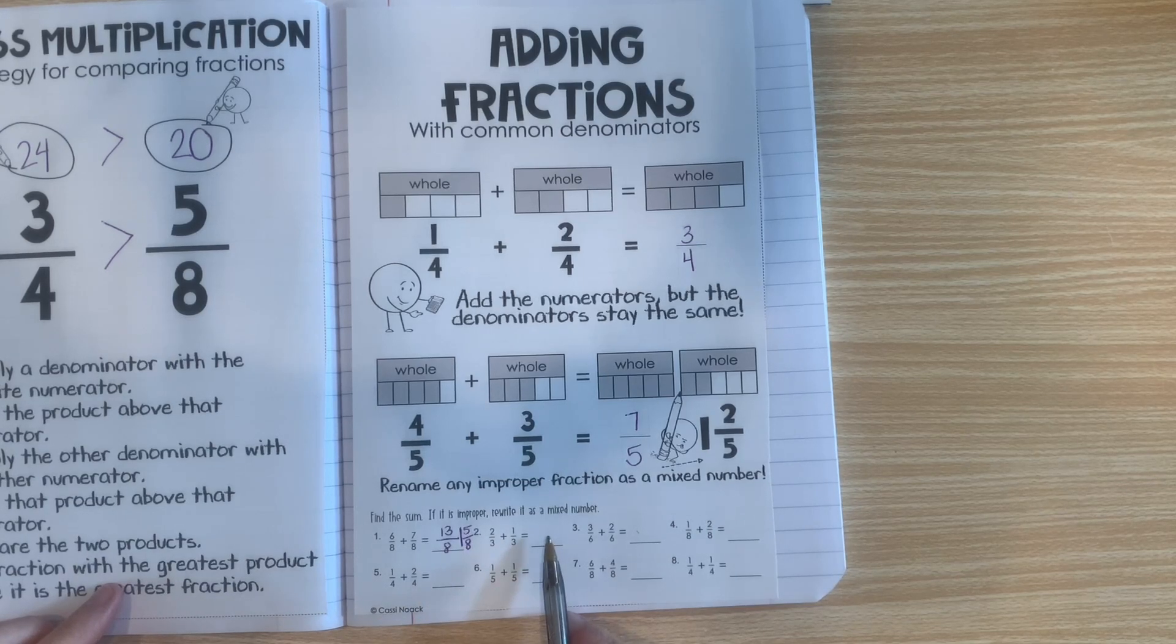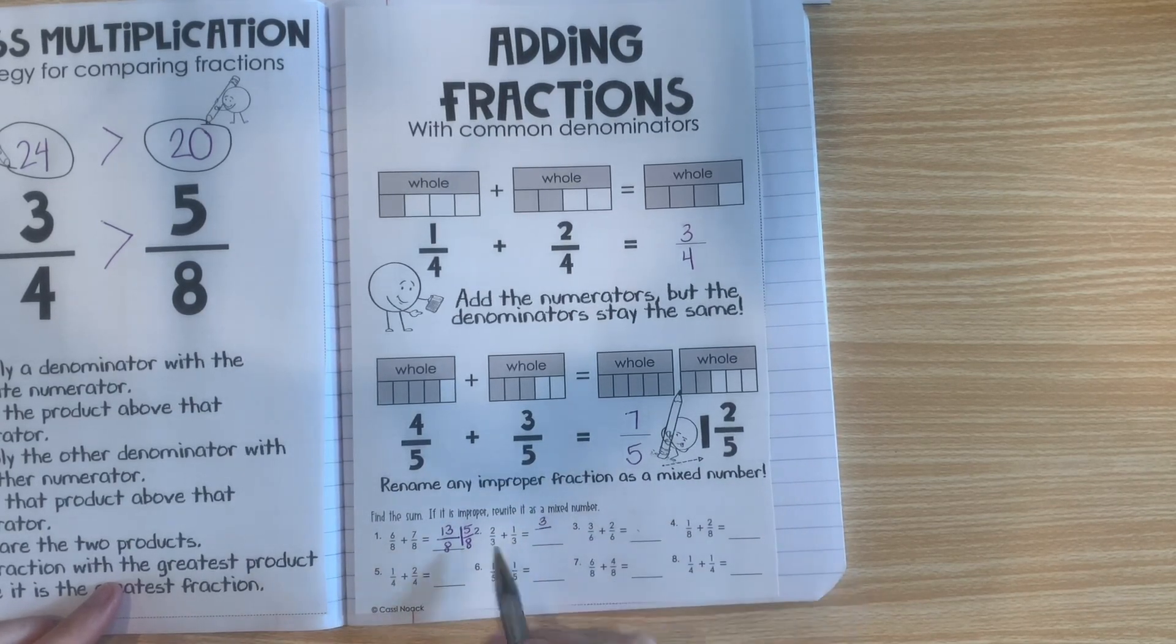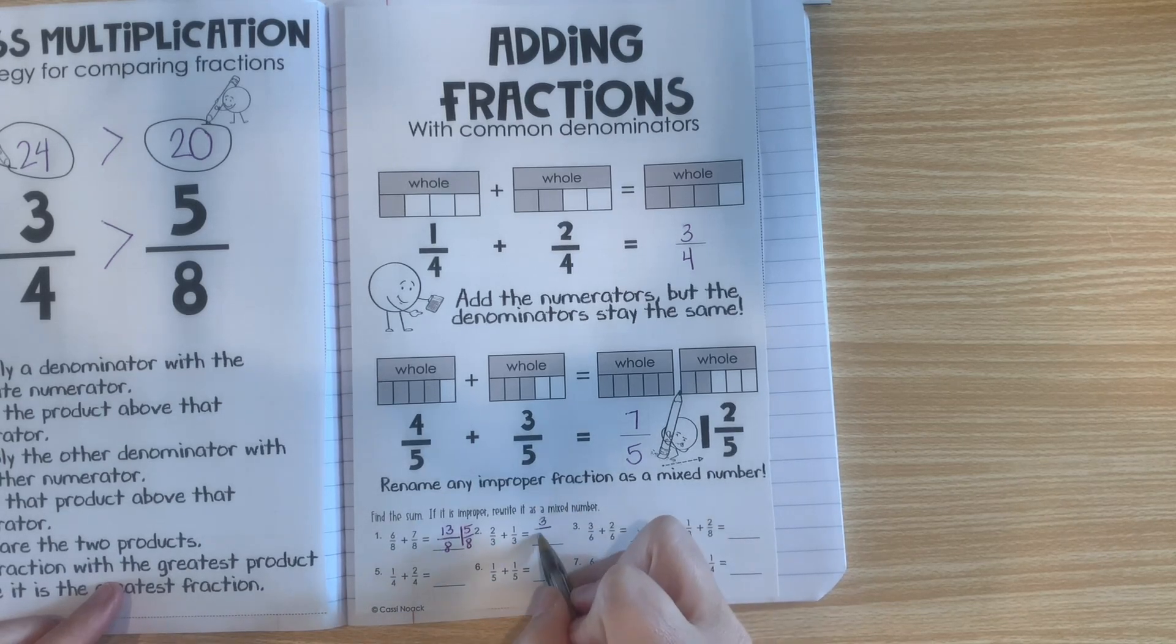Okay, now let's do another one. Here we have 2 plus 1 for our numerators. So, our new numerator is going to be 3. And our denominator stays the same.